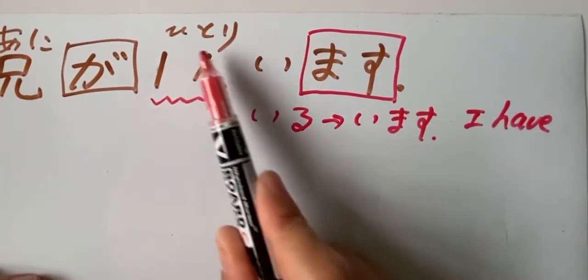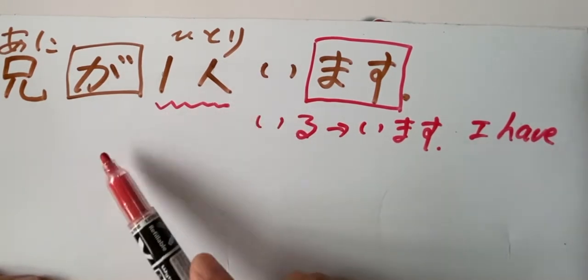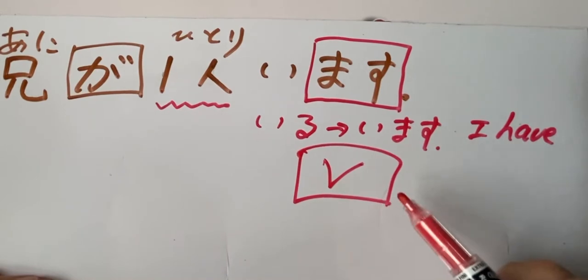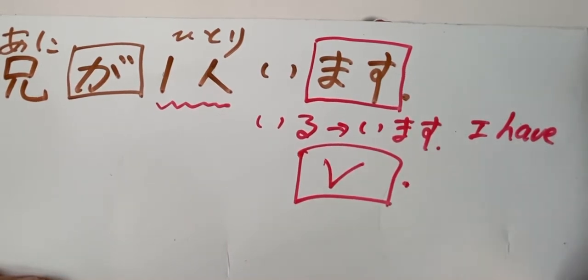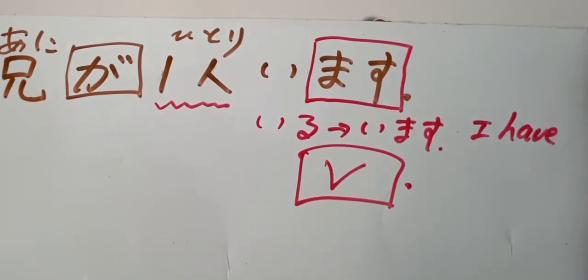Ne. If you want to, if you have two, here will be futari. Ne. Futari. Okay. In the Japanese sentence, remember, the verb is always behind. Behind.